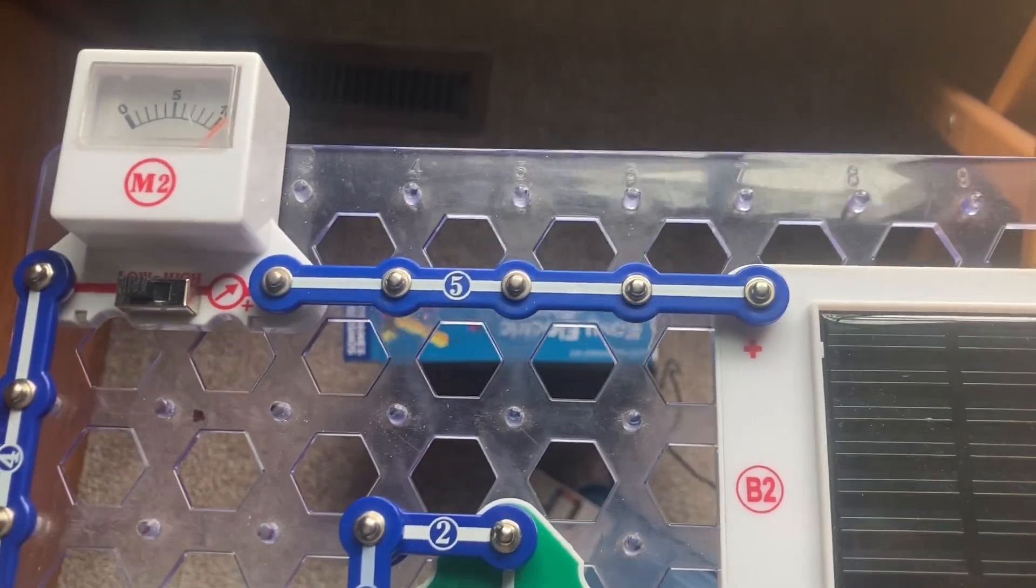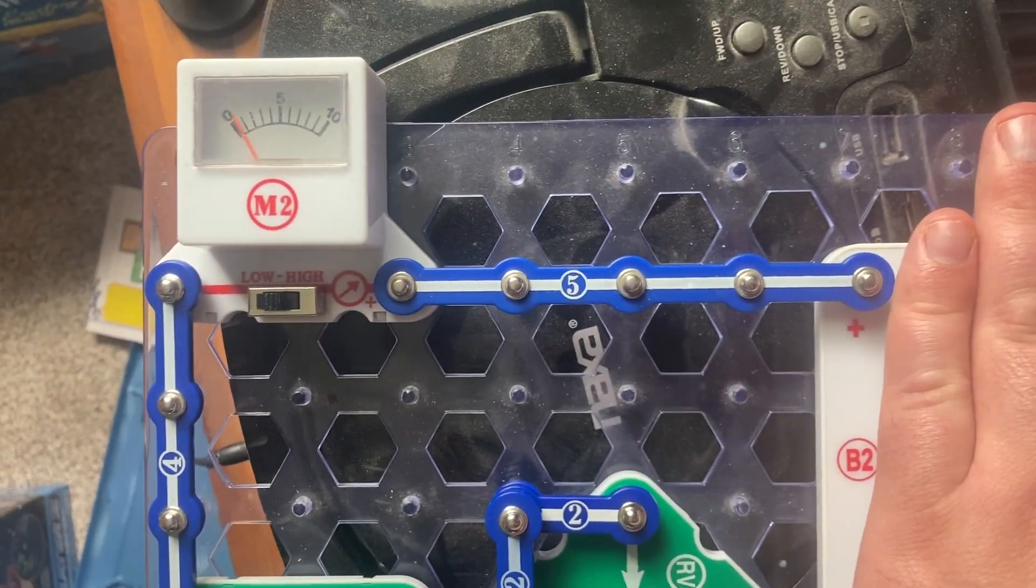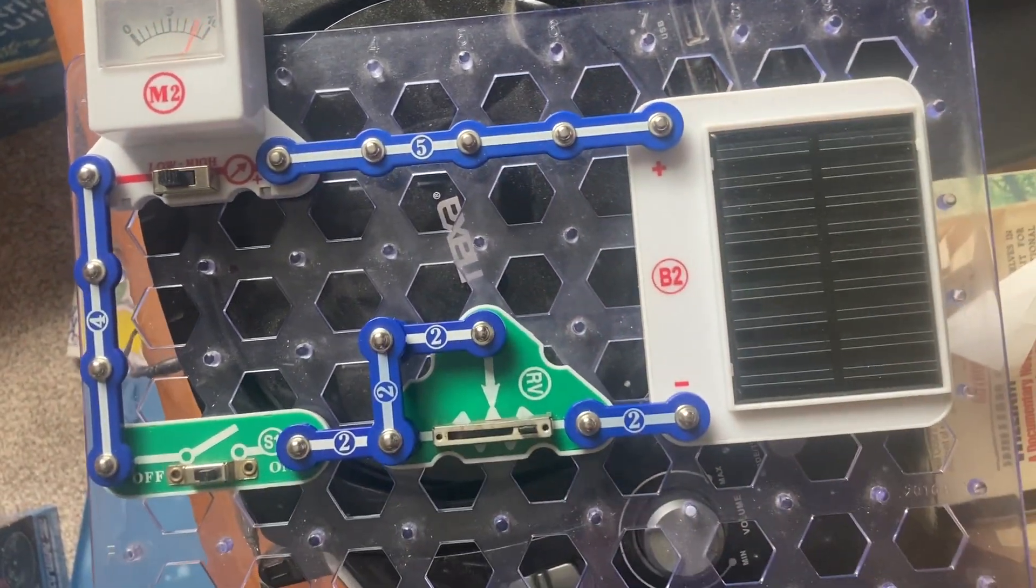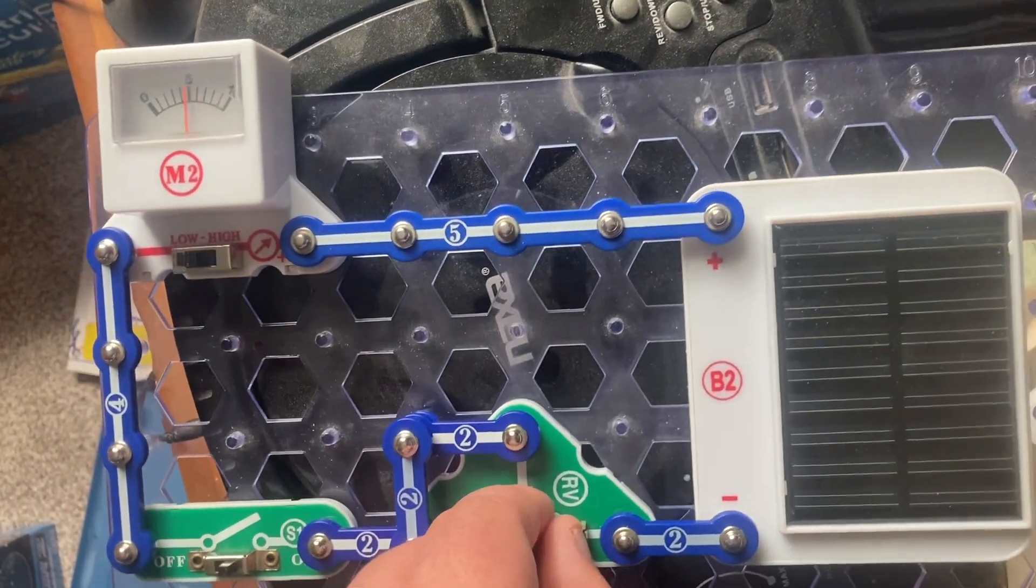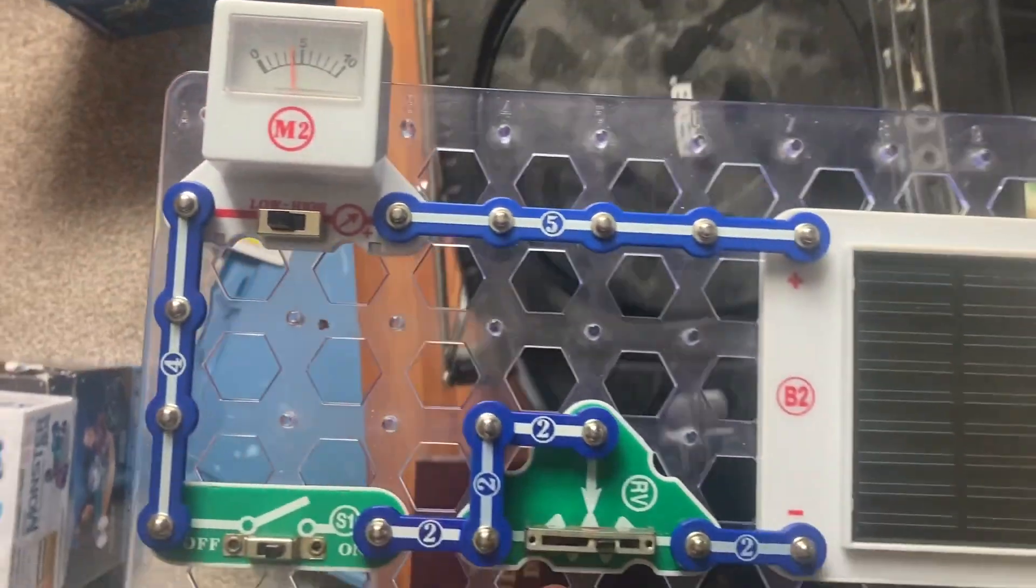Then, if I were to cover the solar cell, look how much the current drops. Because, obviously, light cannot get to the circuit. Solar power is the only way the circuit works.